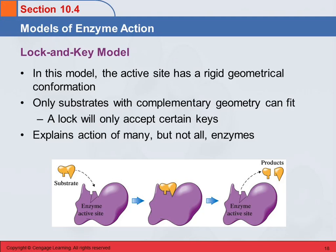There are different models of how enzymes work. One of them, which is the simplest and easiest to understand, is the lock and key model. In this explanation, the active site is rigid — it has a specific geometrical conformation and the substrate has to come in and fit in there perfectly, just like a lock and a key. Only certain keys will fit because the lock is rigid and has to be exactly the right shape. This model explains the action of many enzymes, but it doesn't explain all of them.